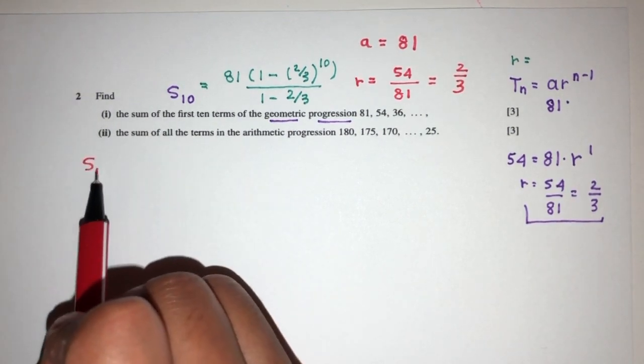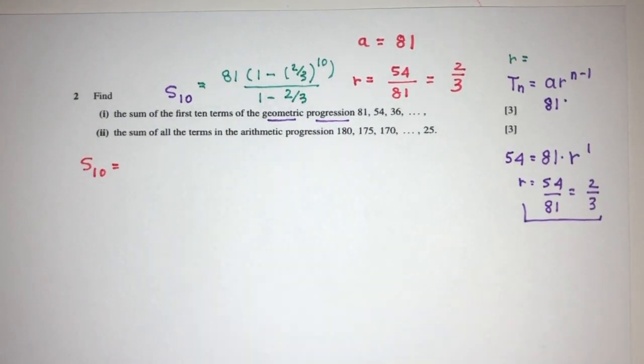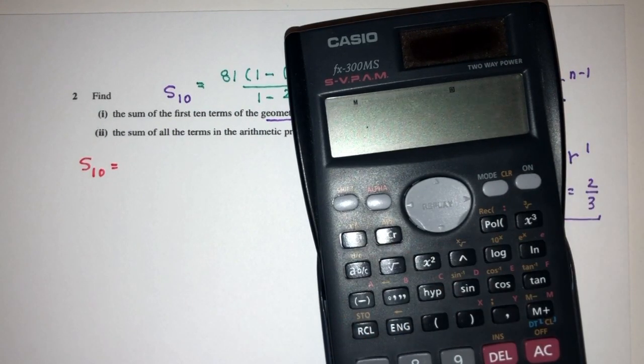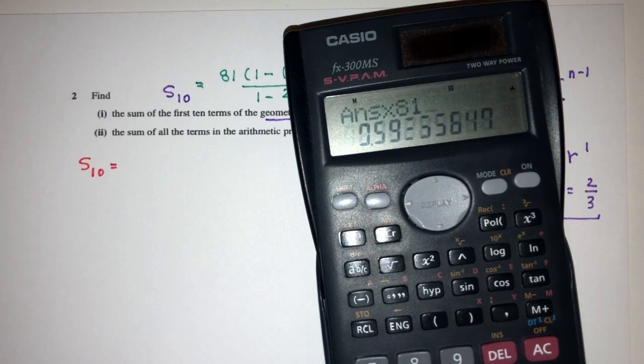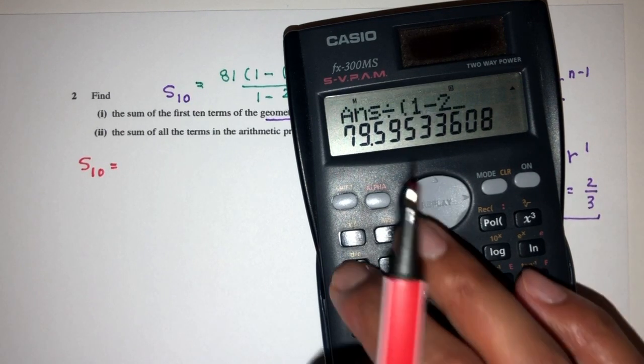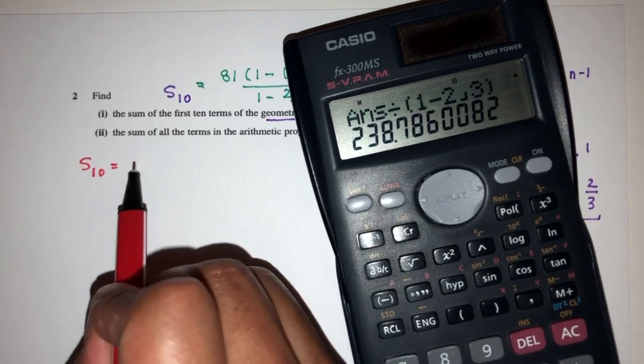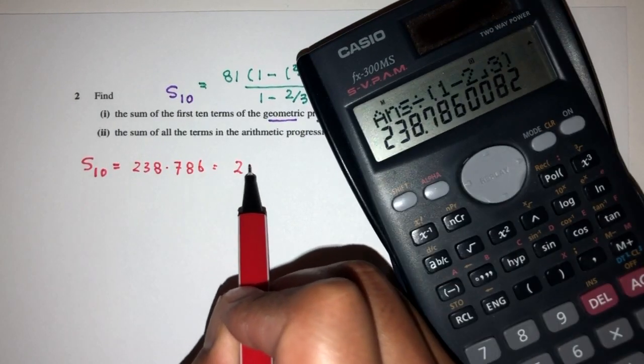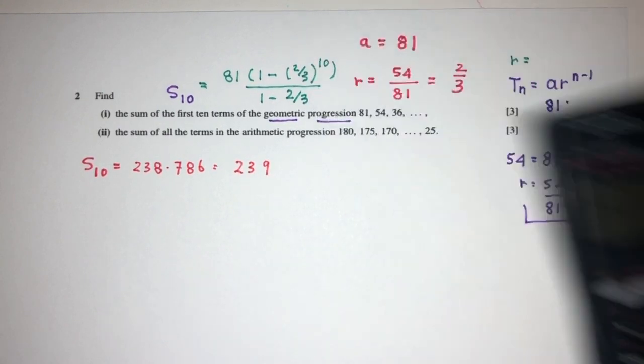Now, moving on, sum of the first 10 terms, we just have to solve this. That will be 1 minus 2 over 3 power 10, times 81, divided by 1 minus 2 over 3. That will be 238.786, which is 239.